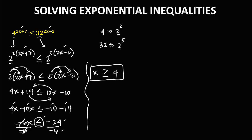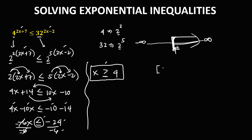Negative 24 divided by negative 6 is positive 4, so x is greater than or equal to 4. On the number line, since we have greater than or equal to, this is a closed interval. Using bracket notation for the closed endpoint, the solution set in interval notation is [4, positive infinity).